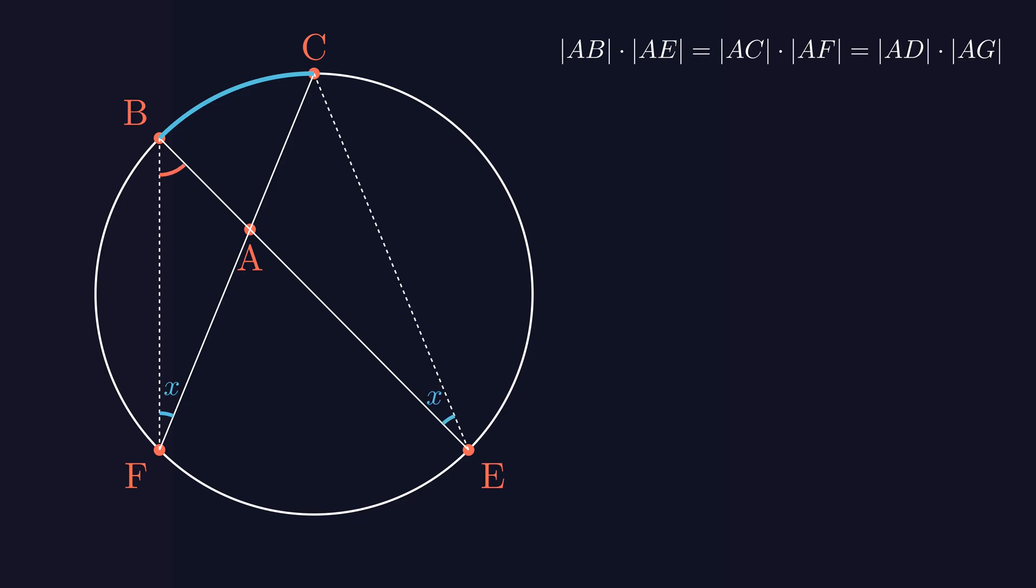Now, if I call angle FBE as Y, this one sees the arc FE. So, angle FCE must also be Y. That means the third angles are equal too, right? So, the red triangle and the green triangle both have the same angles. That makes them similar triangles.